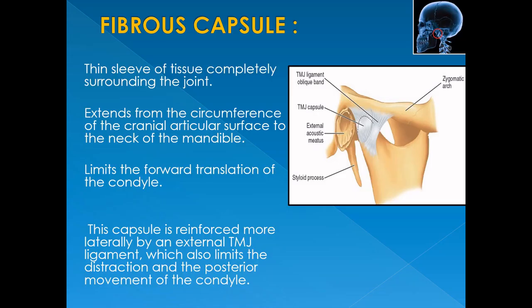The TMJ capsule is a thin sleeve of tissue completely surrounding the joint, extending from the circumference of the cranial articular surface to the neck of the mandible, reinforced laterally by the temporomandibular ligament. The joint capsule and the temporomandibular ligament function to limit the movements of the mandible. Vertical fibers limit distraction movement, horizontal fibers prevent excessive retrusive movement, and the posterior portion of the capsule limits protrusive movement.